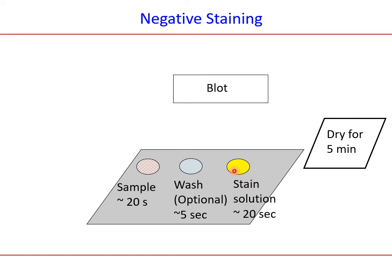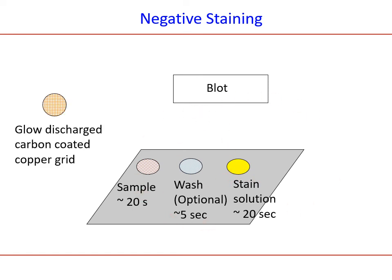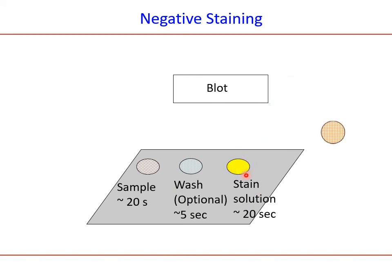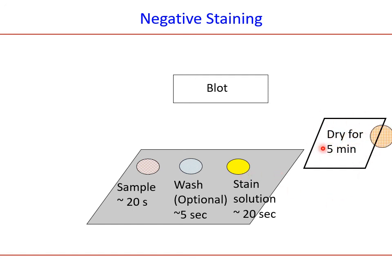To summarize the steps one more time: glow discharge the grid, place on sample, blot, move to wash, blot, move to stain, then let it dry — after drying, take it for electron microscope experiment. For drying, although 5 minutes is mentioned, it is recommended to leave it overnight, because the grid must be completely free from water molecules before entering the electron microscope.